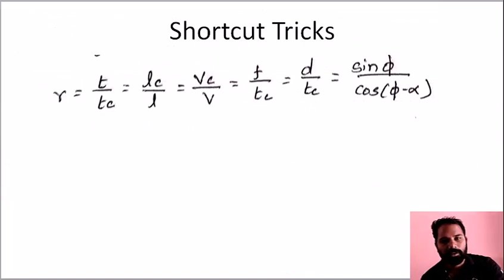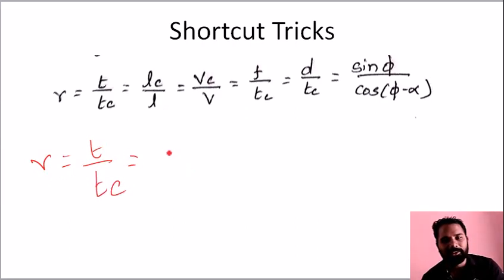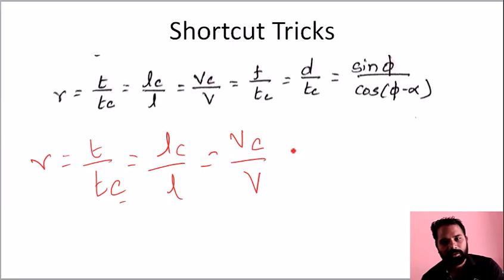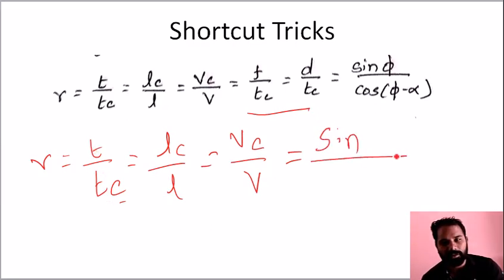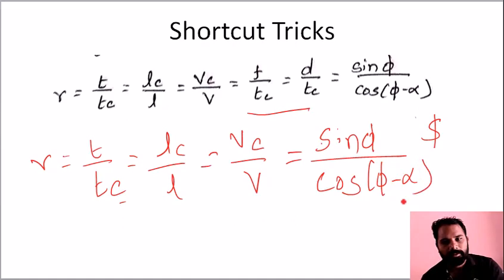In summary: R equals T by Tc. The remaining relationships in terms of length give Lc by L, and in terms of velocity give Vc by V. In terms of angle, R equals sin(φ) divided by cos(φ minus α), where tan gives sin by cos. The bottom term is (φ minus α).